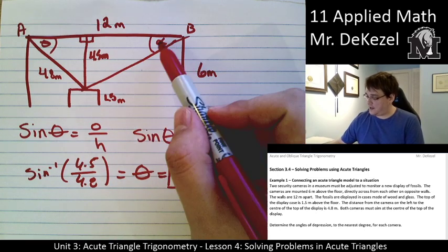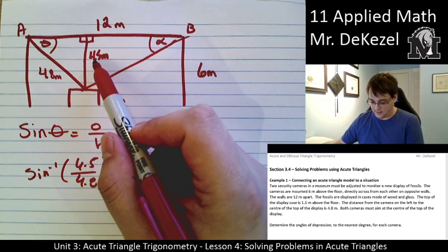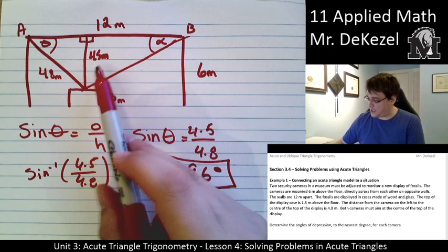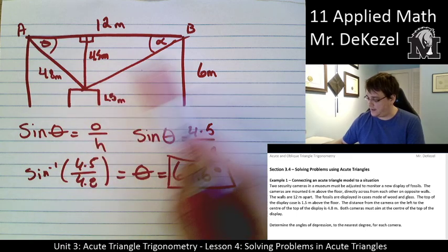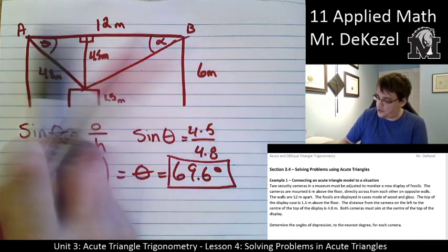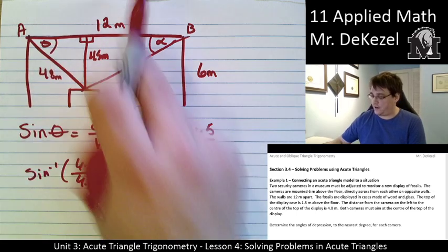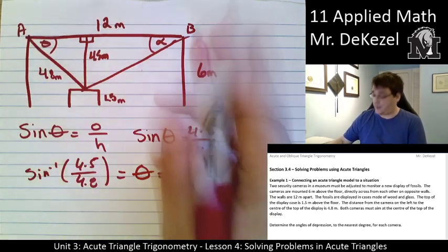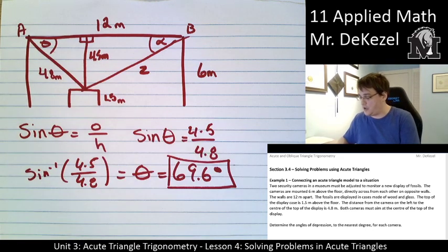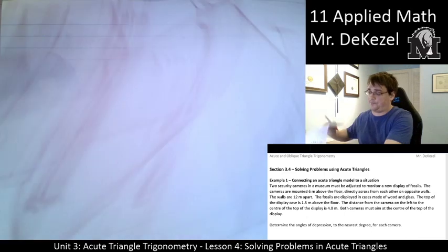Now I want to find this angle. I could find Zed using the large triangle. If I use this big triangle, I have two sides and an angle now that are all next to each other. So I can use the cosine law to find out what Zed should be. Zed is across from our newly known angle, 69.6, so it's going to be on the left side of the equal side.